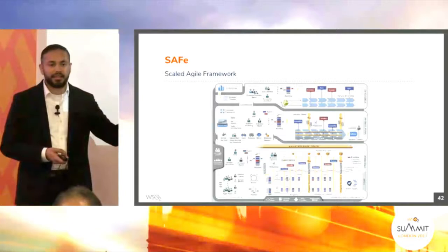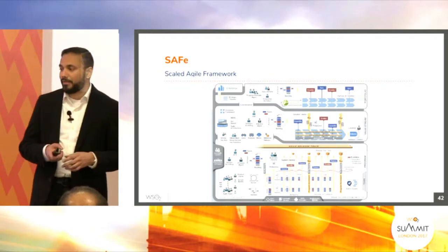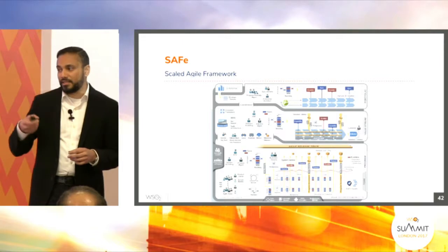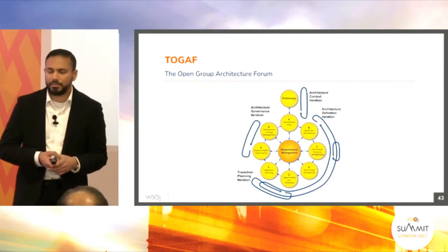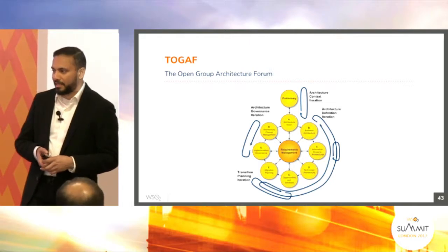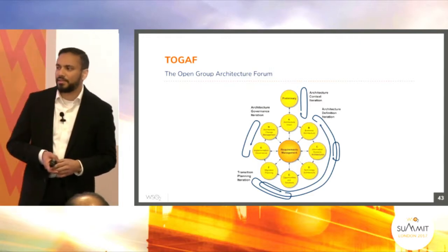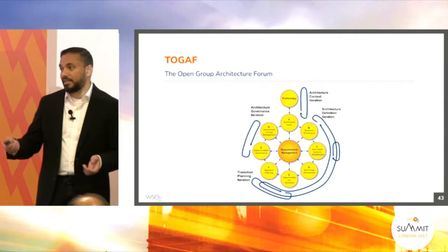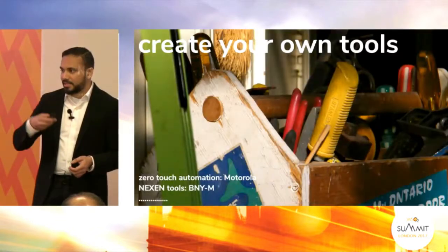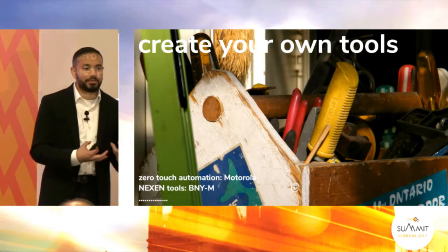The first is SAFe — Scaled Agile Framework. This is a little heavier than normal Scrum standards, but it provides a proper architecture framework for agile principles and iterative improvement. The next is TOGAF, done by the Open Group Architecture Forum — it has a nice architecture practice that also supports the iterative approach. If you go to their website, all documentation is free to download. Those are the standard tools from the industry, but our advice is to also create your own tools, because the standard tools provide some capabilities but you have to build your own things.